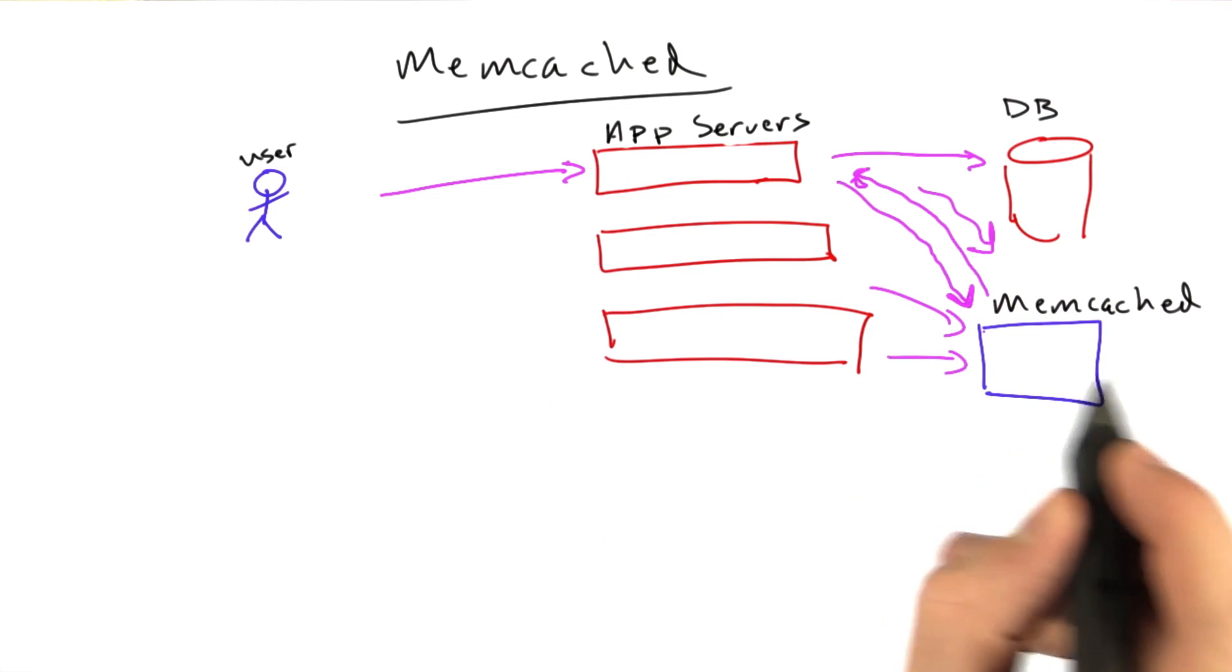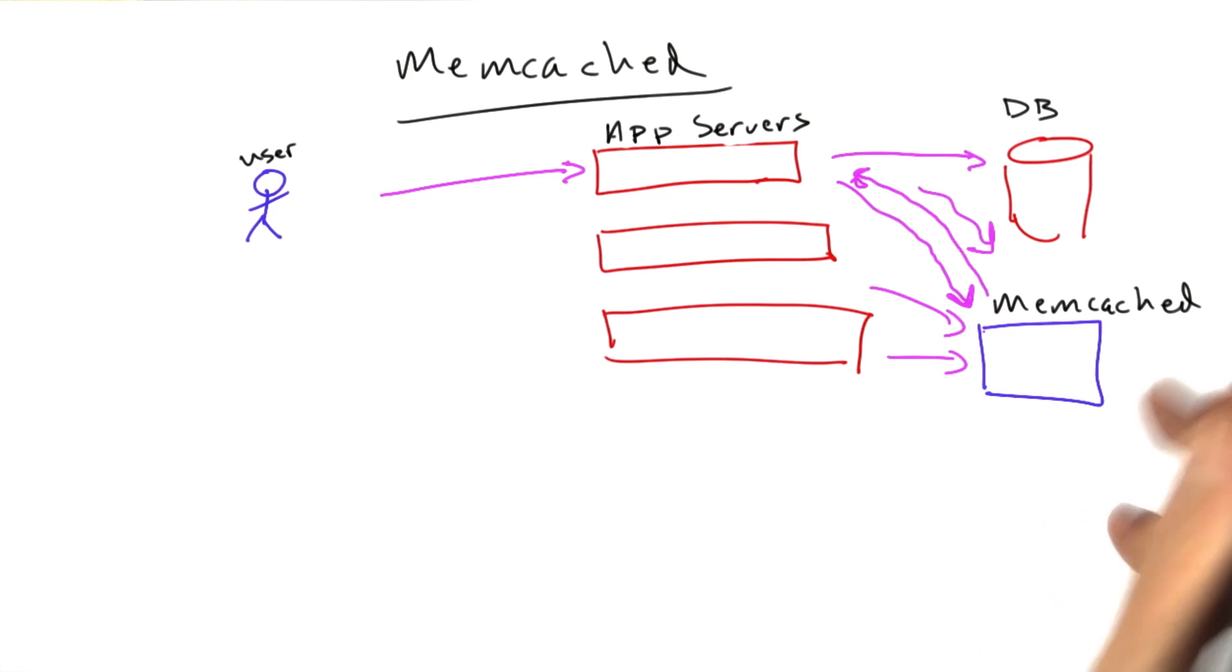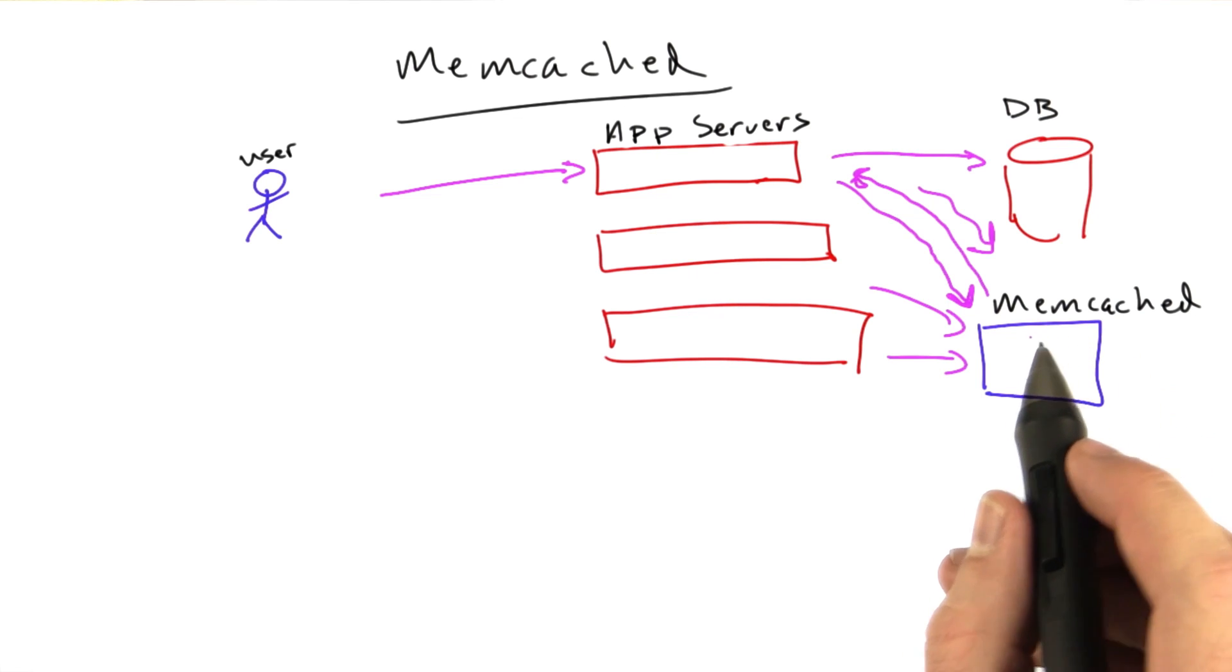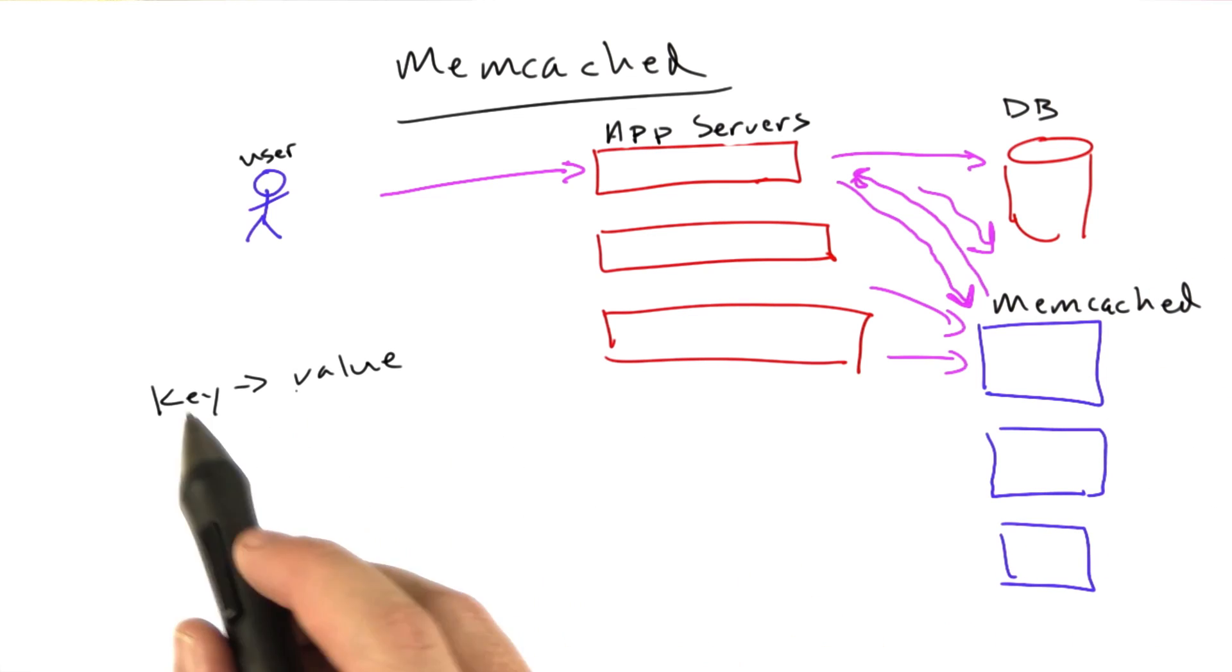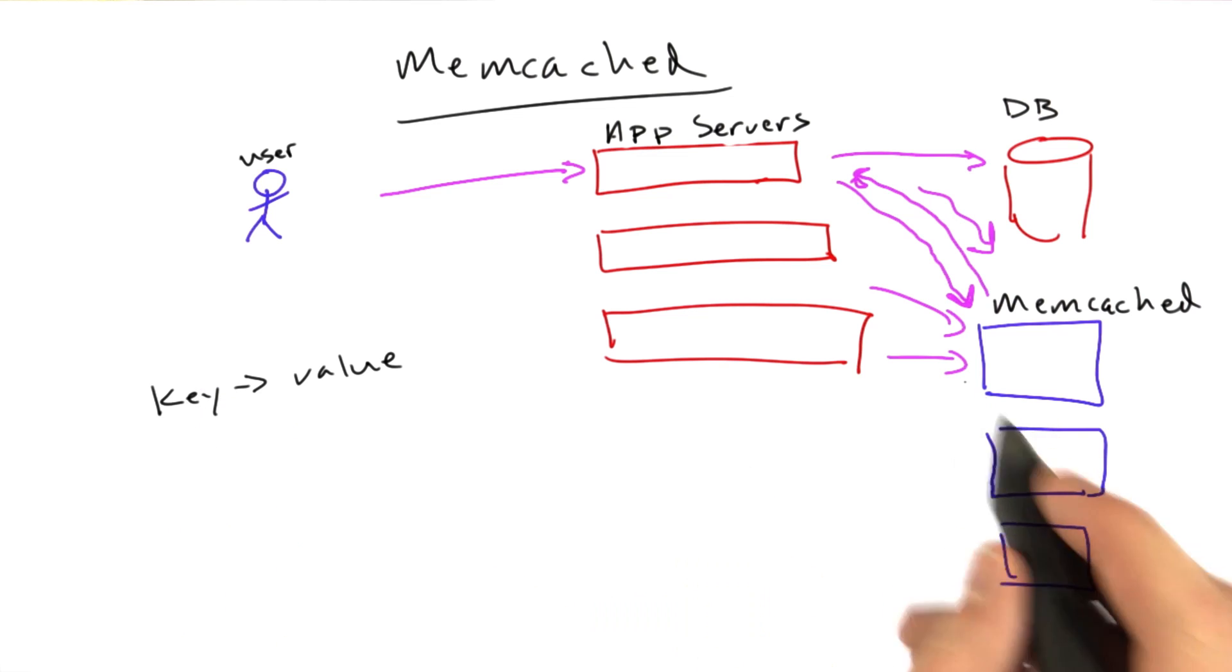What's handy about it is all of these app servers can interact with Memcached. Memcached is fast enough and can support many sockets that it works very well in this scenario. Also, most Memcached libraries have built into it this notion of having multiple Memcached machines. Because Memcached is just a key value store, it's like basically a giant hash table, you can hash on the keys to decide which server to send your data to.